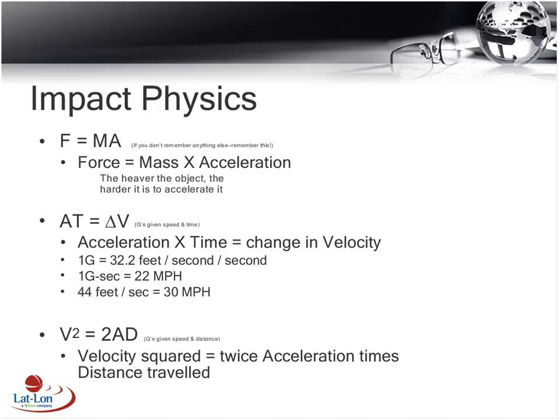One conversion factor: 44 feet per second equals 30 miles per hour. Miles per hour is what we're used to, but we use feet and feet per second in these equations. And V² = 2 × acceleration × distance traveled, so if you know travel distance and either acceleration or velocity, you can get the other.